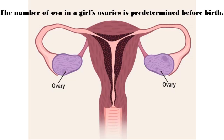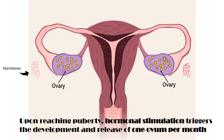The number of ova in a girl's ovaries is predetermined before birth. Upon reaching puberty, hormonal stimulation triggers the development and release of one ovum per month, a process that continues until menopause.